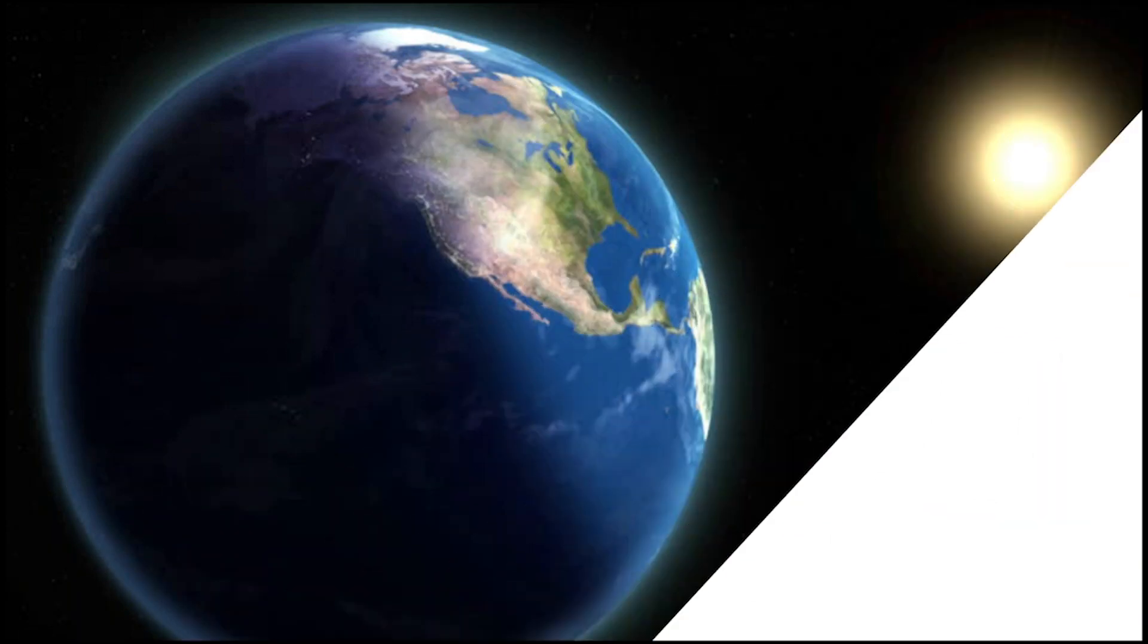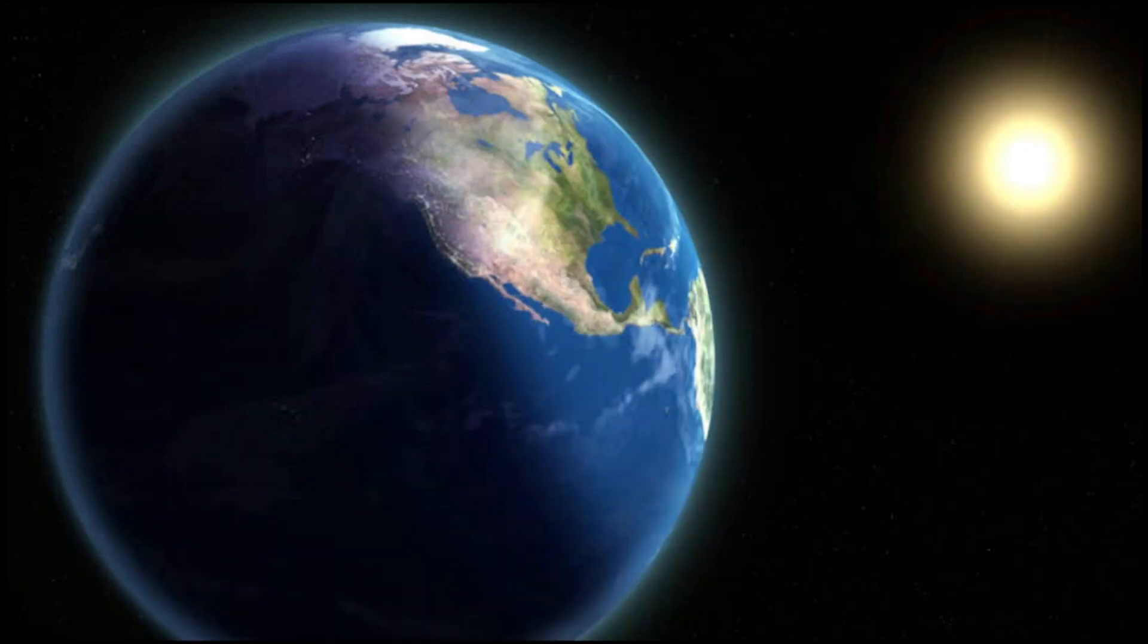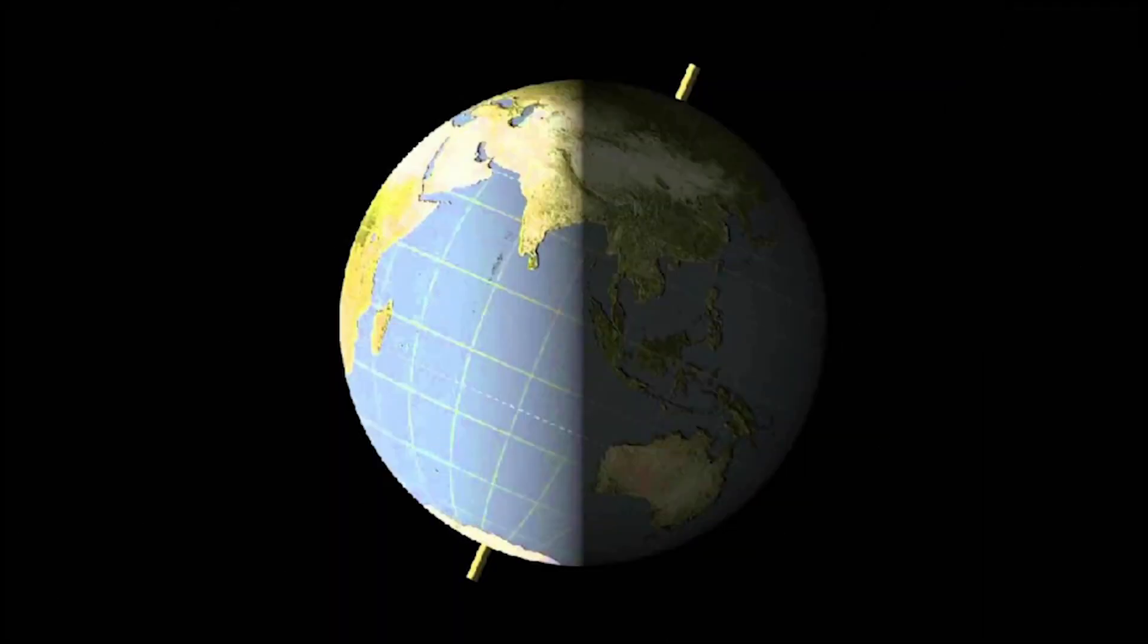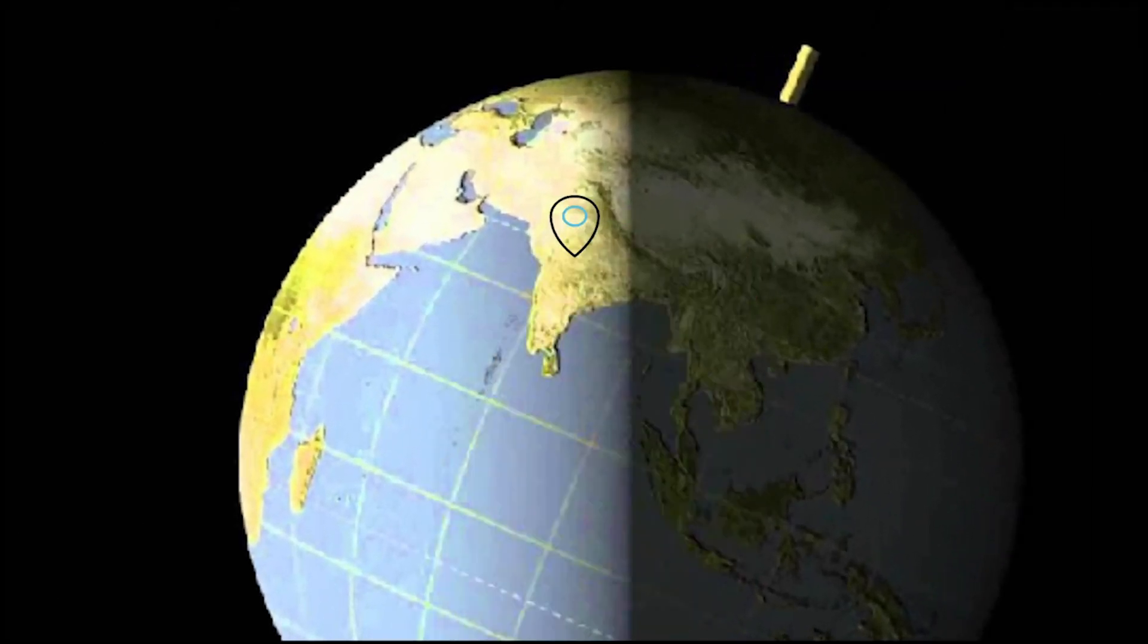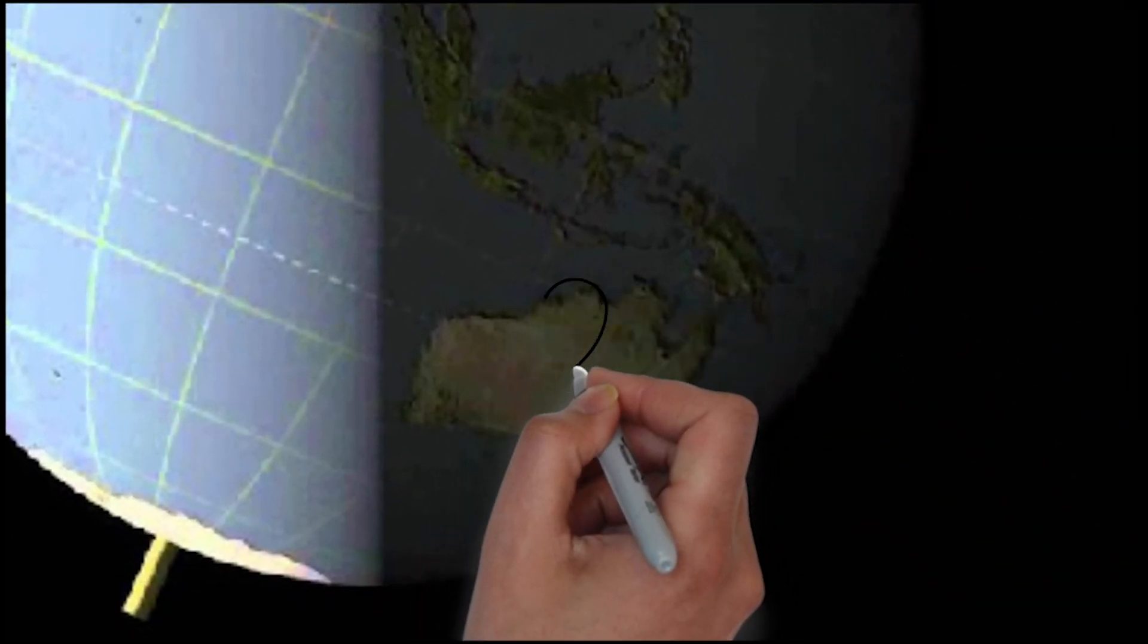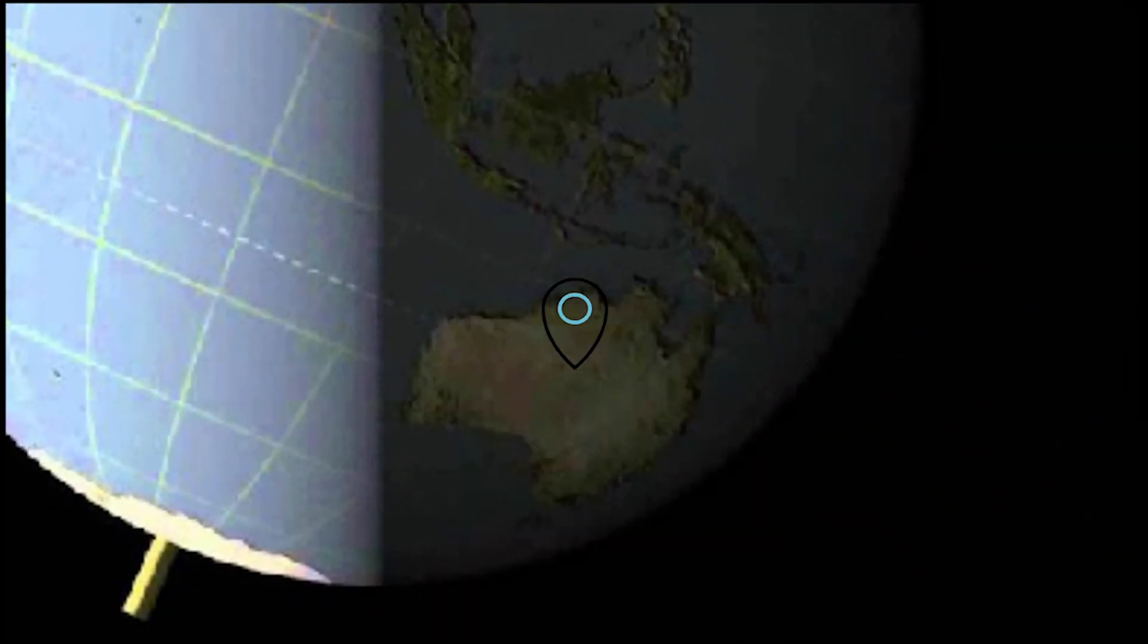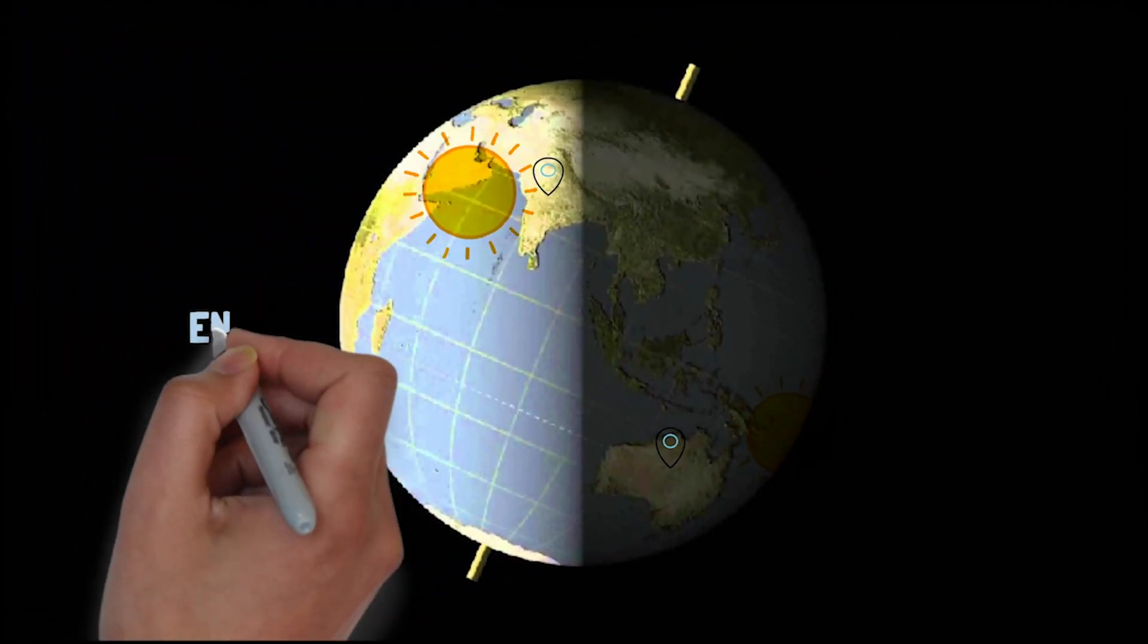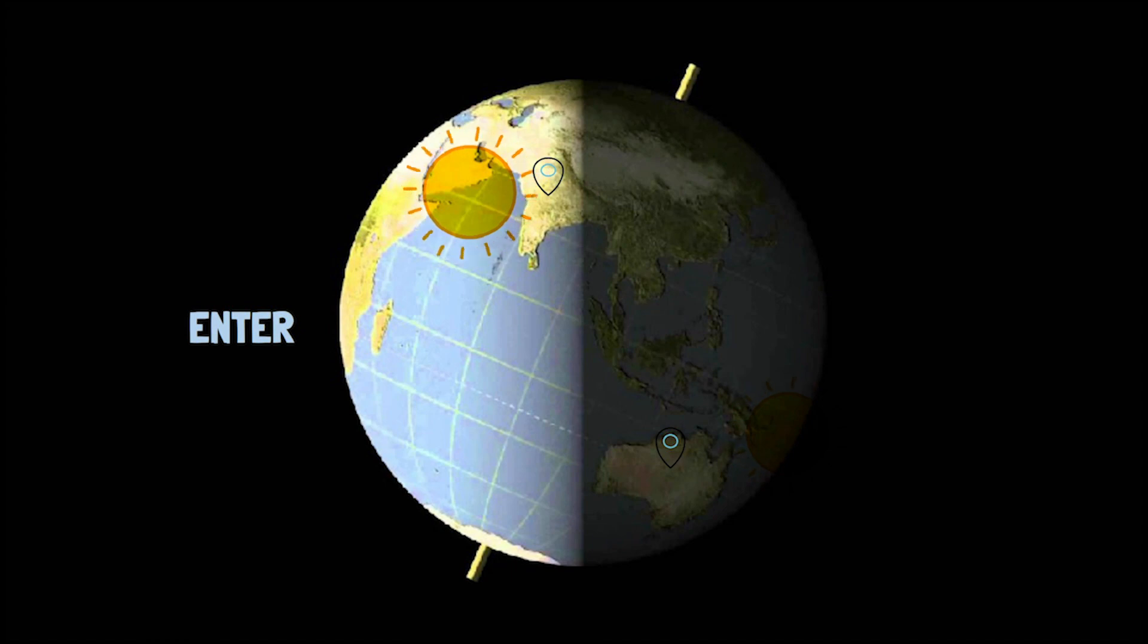As earth rotates, different parts of earth receive sunlight or darkness, giving us day and night. As your location on earth rotates into sunlight, you see the sunrise.